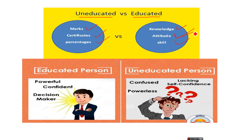If a person is not behaving properly, some people think he's arrogant or uneducated. But others think he might be disturbed by family problems, might have faced challenges, or might be mentally disturbed. The way you see it makes a difference — that is your attitude. Your response or reaction to circumstances is called your attitude. Once you shape your attitude properly, you become skillful and efficient.